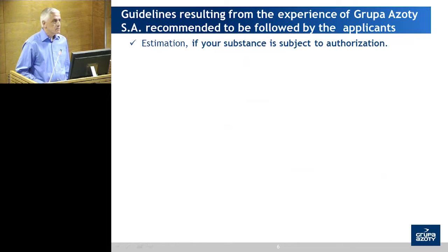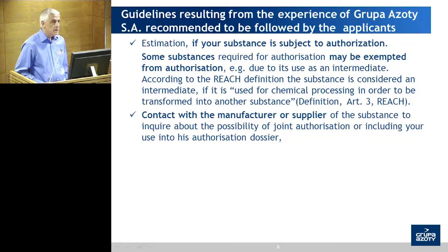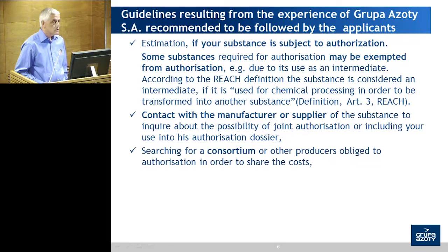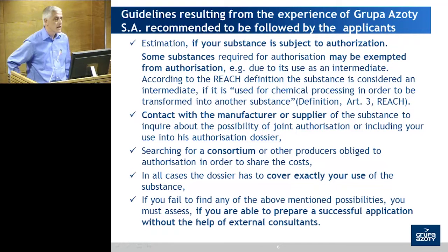The advice from Grupa Zoti is that you have to estimate if your substance is subject to authorization. We already heard about the possible exemptions. They also tried to contact the manufacturer and supplier, but had to do a downstream user application. There's also the option of searching for consortia. And make sure that your dossier covers exactly your use — that's the key message. Then you have to analyze whether you file the application entirely on your own, or whether you need the help of external consultants.